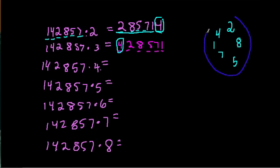So in the first product, we had 285714. Now, in the next product, we move here, and we go 428571. So same order, but different starting point.